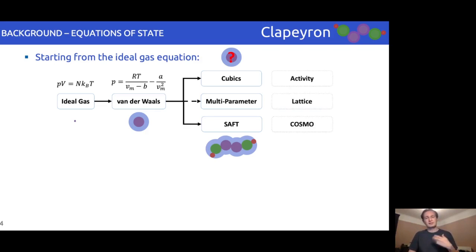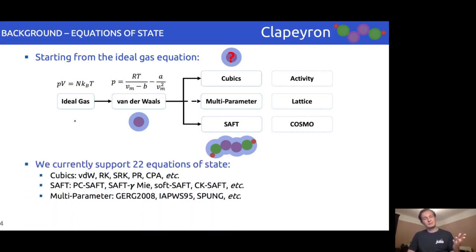A few others which are commonly used include activity, lattice, and COSMO-based models, which we aim to someday include in the package. Nevertheless, within Clapeyron, we support 22 equations of state, including the popular cubics, SAFT, and multi-parameter equations of state. In this package, we offer more SAFT equations in a single package than any other existing one.